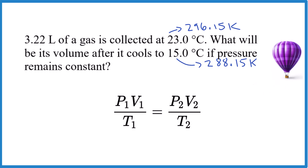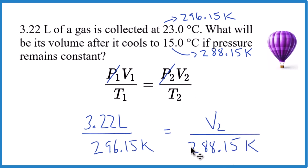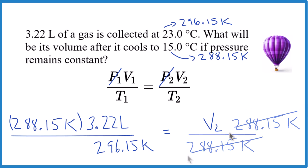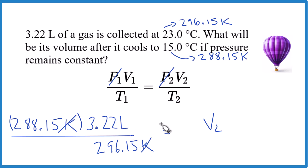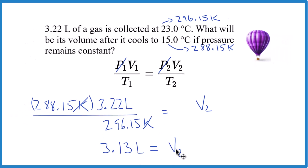Now pause and see if you can solve this problem. The pressure remains constant, so let's remove that. We just need to put these variables in and solve for V2. Multiply both sides by 288.15 K so it cancels out, giving us V2 by itself. Kelvin cancels out and we're left with liters. Multiply and divide — we end up with 3.13 liters.